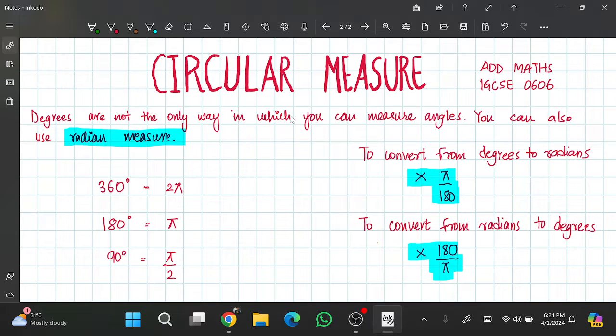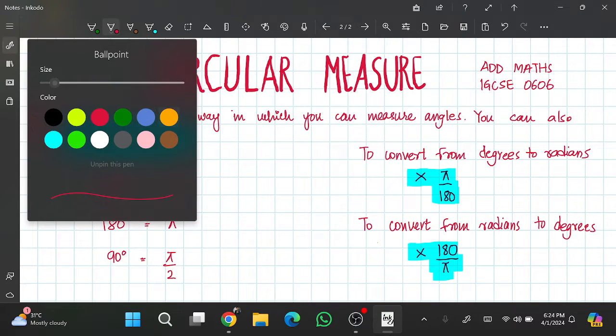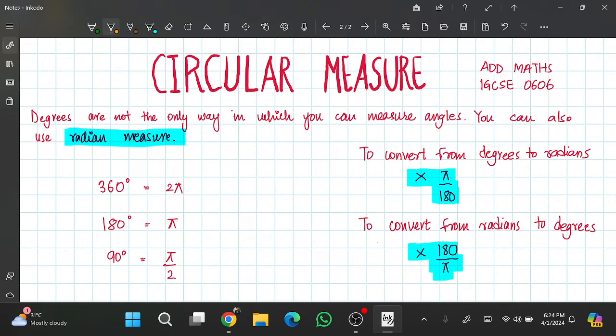You can also use radian measure. With that we know that 360 degrees is 2π, 180 degrees is π, 90 degrees is π/2, 45 degrees will be π/4, then 720 degrees would be 4π.